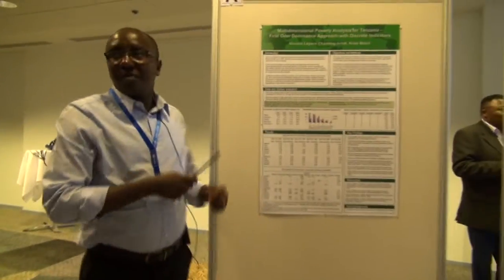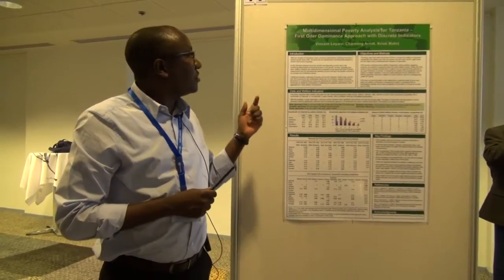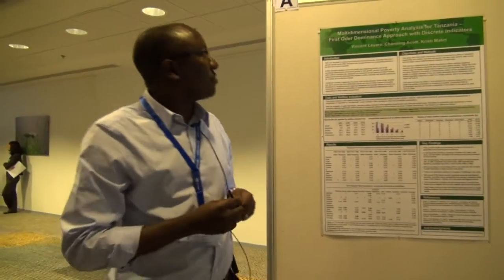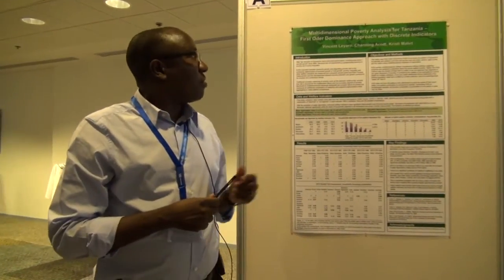This is a paper which we are doing with Channing and Christ. It's about the multidimensional poverty analysis for Tanzania, trying to use welfare indicators and apply the first-order dominance approach.